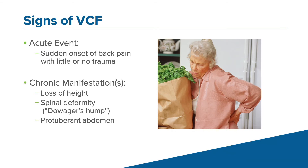Signs of a fracture include sudden onset of back pain, which is the most common presentation, though some fractures cause no pain at all. Chronic manifestations can be even more problematic, including loss of overall height, spinal deformity or Dowager's hump, and a protruding abdomen — which many people mistake for weight gain, but is actually a result of the spine bending forward.